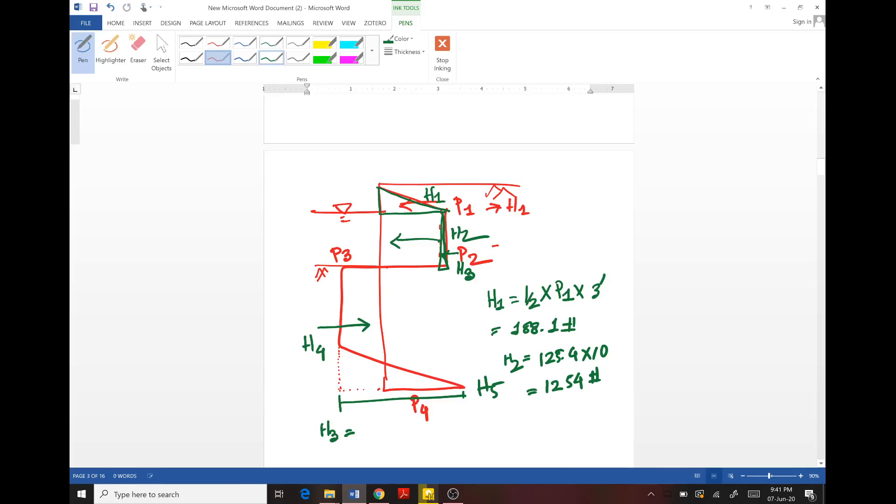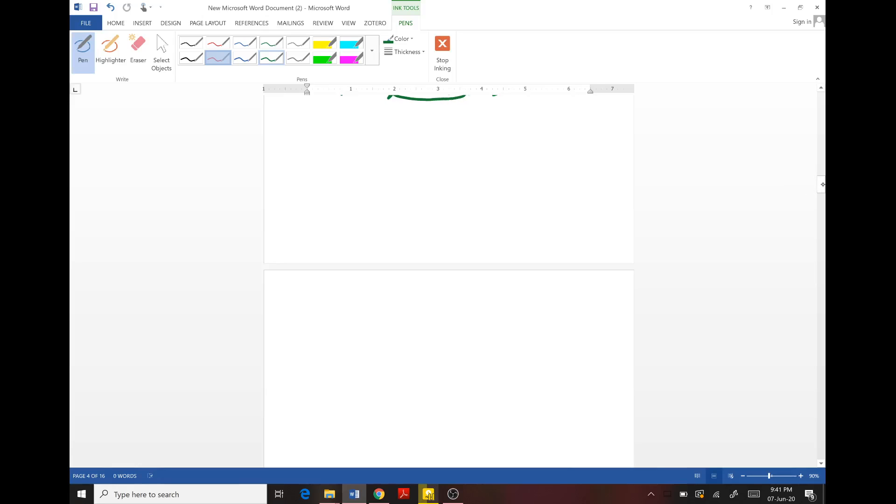H3 is this small triangular area: (305.9 minus 125.4) into 10 into half equals 902.5 pounds. H4 is this triangular area, so 2395 into D, where P3 is 2395.